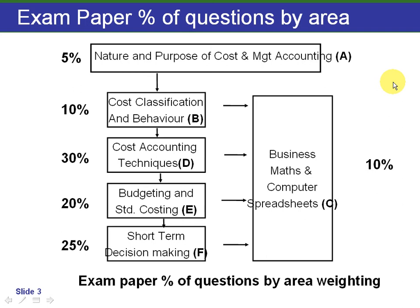The last section, section E, is short-term decision making at 25%. Here we're looking at subjects such as relevant costing, decision making, linear programming, and the use of limited resources.